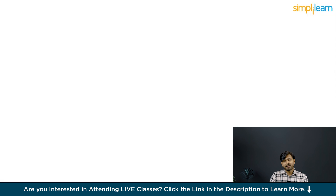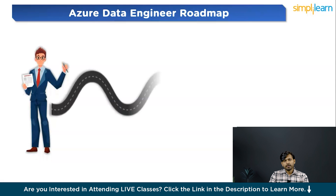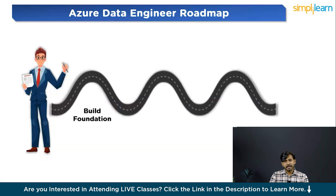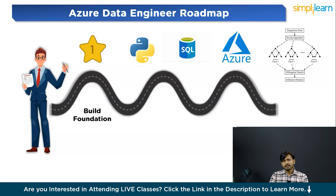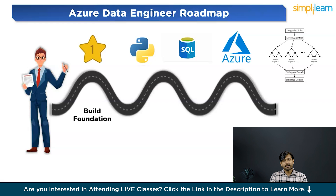Now let's discuss the most crucial part — the roadmap to become a data engineer. The first step is building the foundation. You are going to learn programming languages: start with Python and SQL, then learn PowerShell for Azure automation. Familiarize yourself with the basics of Microsoft Azure, including its services, architectures, and deployment models. Finally, study data structures and algorithms, as they form the backbone of efficient data processing.